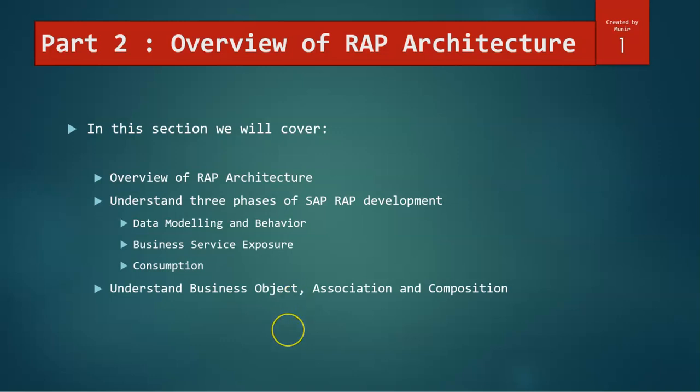We will also try to understand what a business object is and how it is linked with other entities using associations and compositions. With this, let's start.